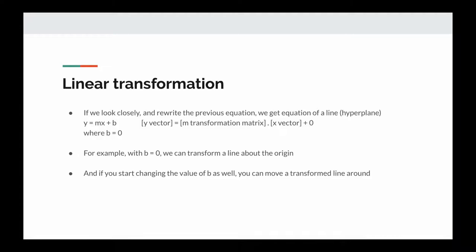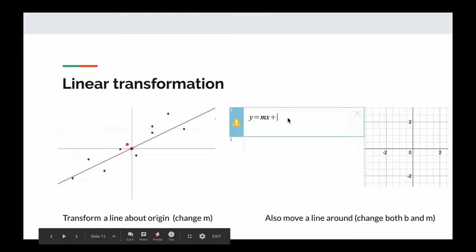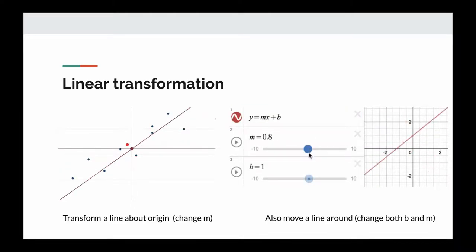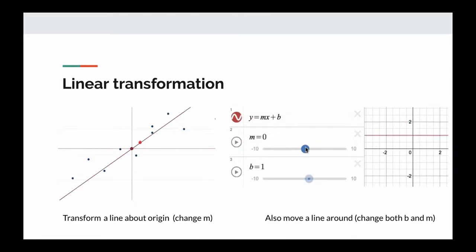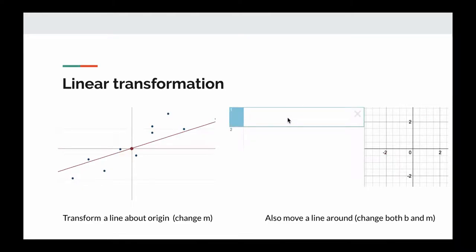As we have seen, y = mx + b: y is the output vector, m is the transformation matrix, and x is the input vector. The constant b is the bias term. When b is 0 we can transform a hyperplane about the origin. When we change the value of b as well we can move the transformed hyperplane around the Cartesian space — not only transform the hyperplane but also move it around the origin.